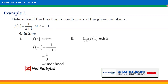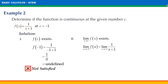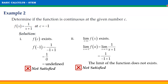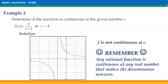For the second condition, the limit of f(x) as x approaches C: the limit of 1/(x+1) as x approaches −1 gives 1/(−1+1) = 1/0, so the limit of the function does not exist. Since the limit does not exist, condition 2 is not satisfied either. Since two conditions are not satisfied, f is not continuous at C.